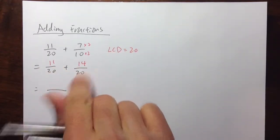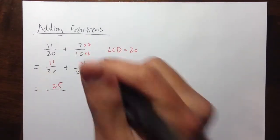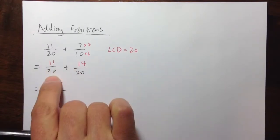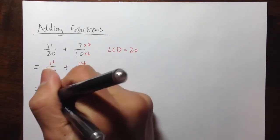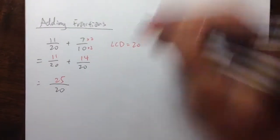11 plus 14, which is 25. And then the denominator stays the same. The 20 stays the same. You just write them down. You don't do anything with the 20, just rewrite it.